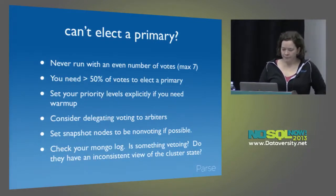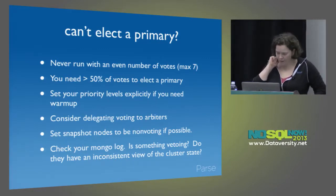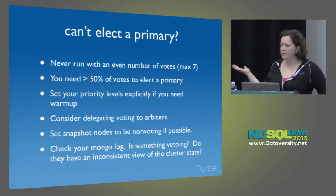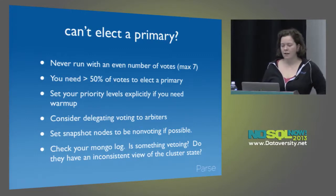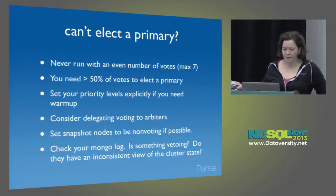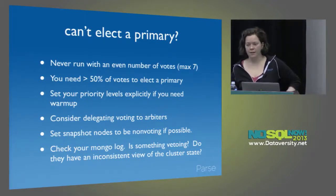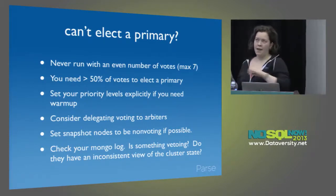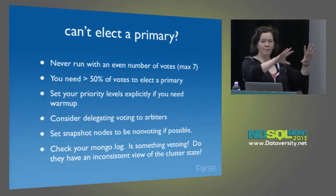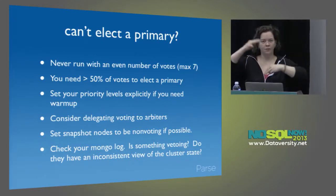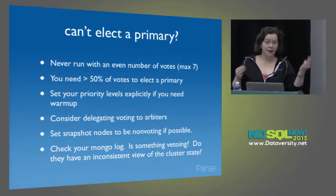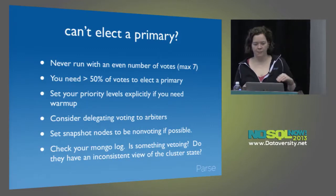If you can't elect a primary, this is a scary situation. Never run with an even number of votes. Remember you need more than 50% of votes to elect a primary. If your secondaries are in a crash loop, something I've had to do is destroy their volumes and restore from an older backup, just so the node would come up, start trying to catch up, and in the meantime provide a vote so I can actually do things on the primary.